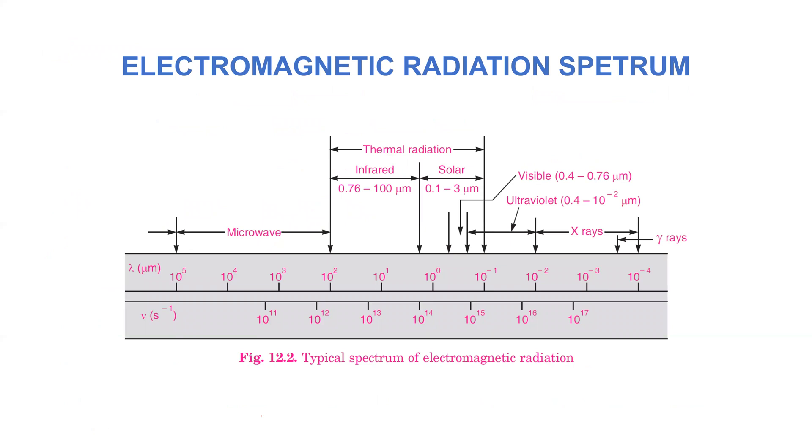Now, this slide shows the electromagnetic radiation spectrum. You can see here microwaves have a wavelength varying between 10 raised to power 2 to 10 raised to power 5 microns. Then we have the thermal radiation. It is varying between 10 raised to power minus 1, which is 0.1 micron, and it varies up to 10 raised to power 2. This is the lower limit of the wavelength and this is the higher limit. Between 0.1 to 100 micron it is thermal radiation. A part of thermal radiation is infrared and solar radiation. Infrared radiation varies between 0.76 micron to 100 microns whereas the solar radiation varies between 0.1 to 3 micrometers and this range is the visible range.